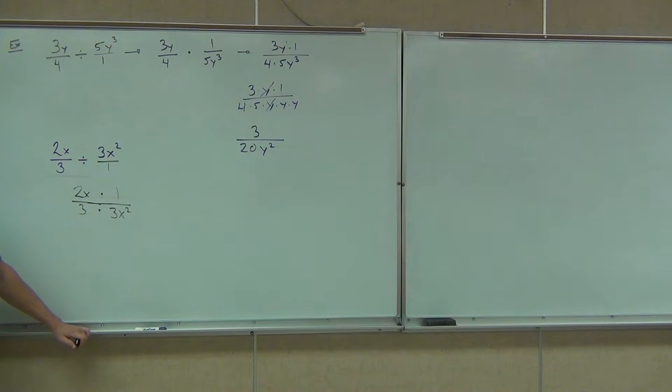Those x's. You've got to do that. So we're going to have 2x or 2 times x times 1 over 3 times 3 times x times x. x squared gives us that x times x. So every time you see that, that's what we're doing.